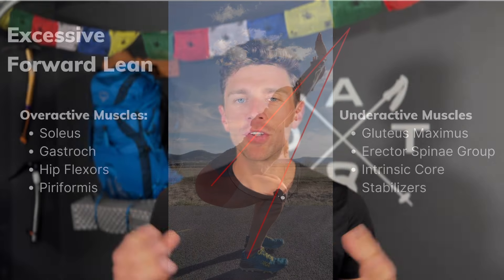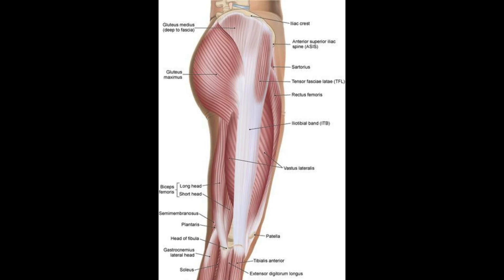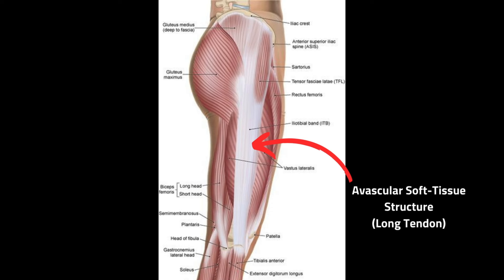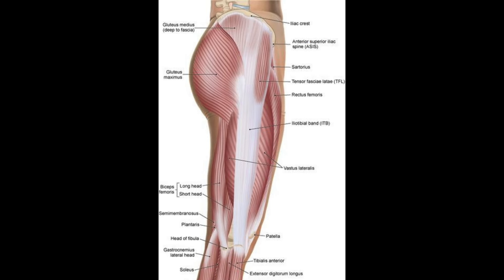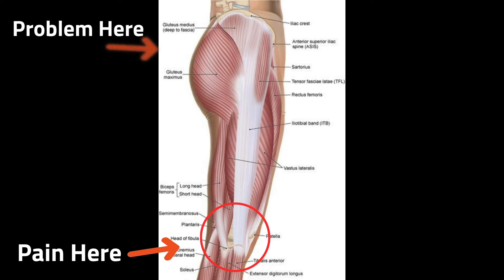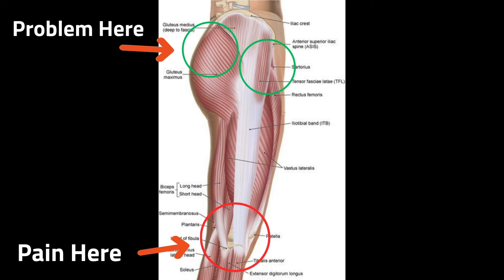The root cause of your IT band syndrome pain really has very little to do with your IT band itself. If we look at the anatomy, it is avascular — on an anatomy chart it is white, there is no blood supply. It is actually just a very long tendon attached to your tensor fasciae latae, which is the muscle that is ultimately contracting and relaxing. Even though your pain might be manifesting down by your knee, that's actually not the problem. The problem is up by your TFL and your glute medius — your glute isn't doing enough, your TFL is taking over, causing tightness all the way down that tendon manifesting as pain on the lateral side of the knee.